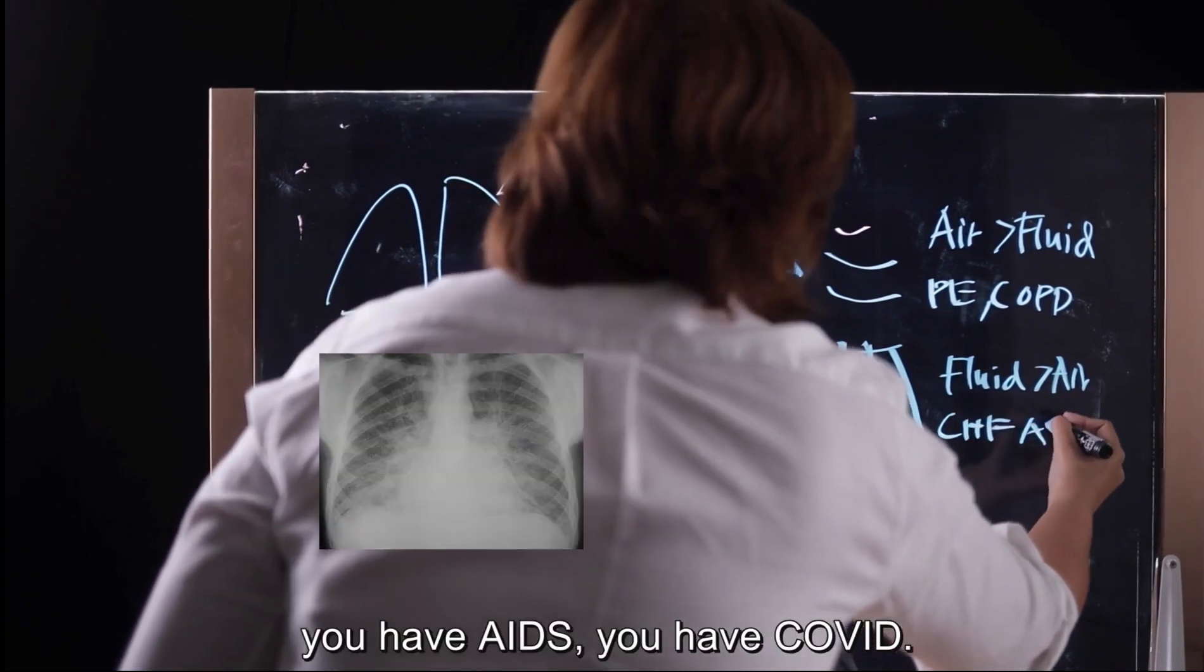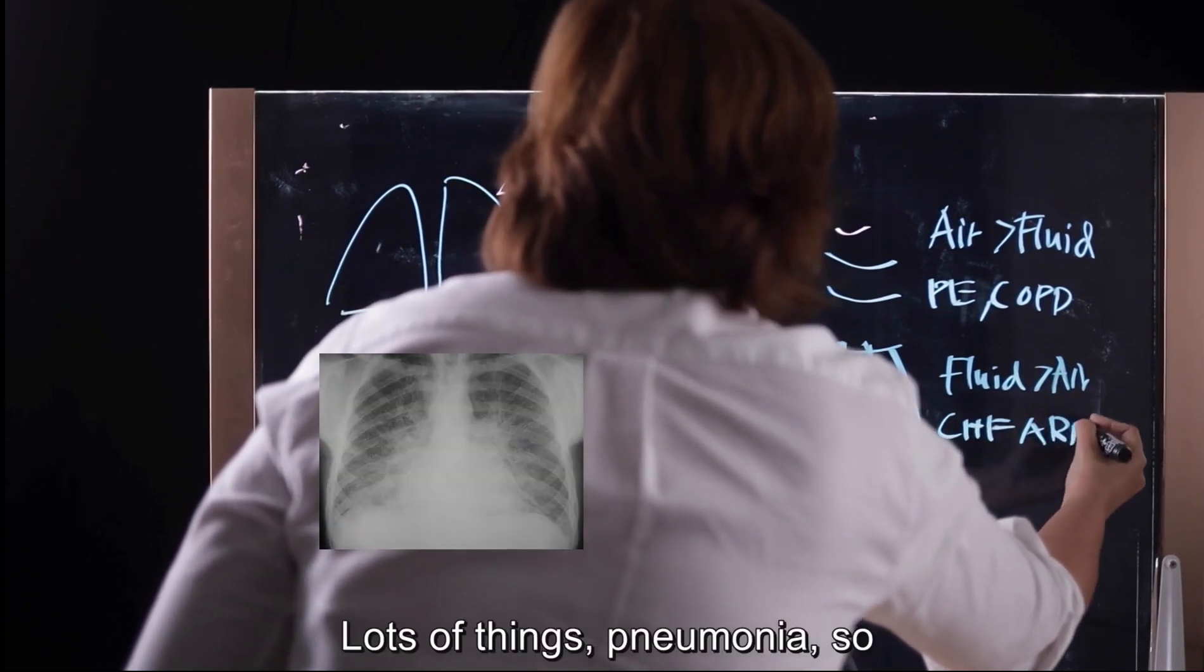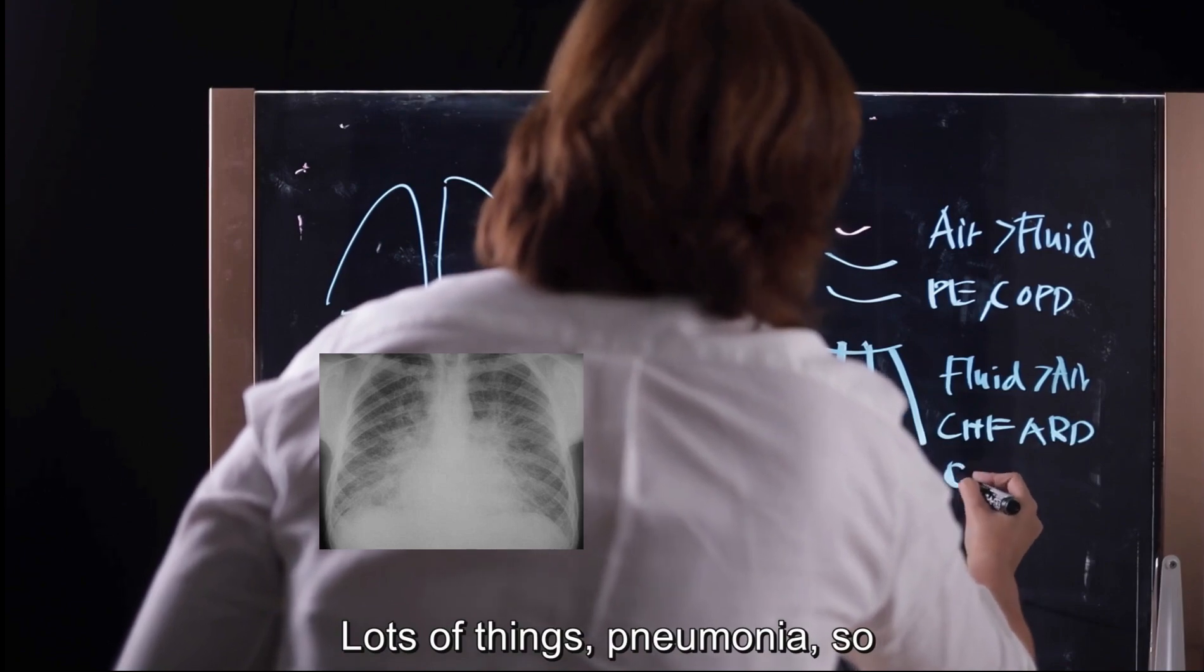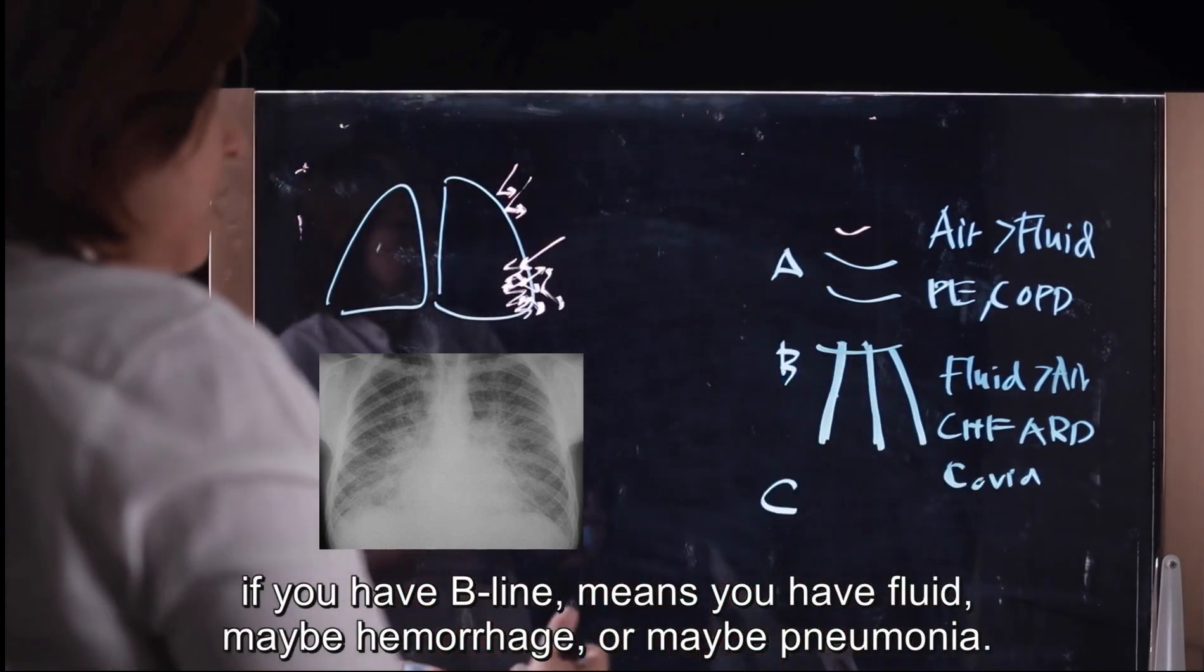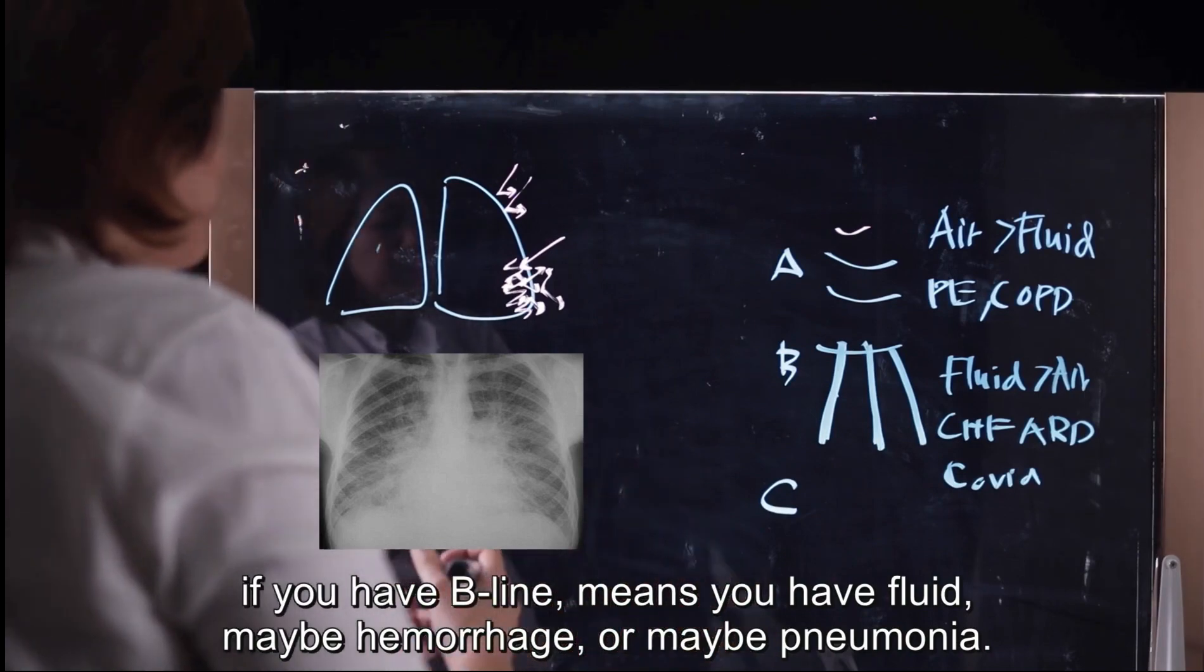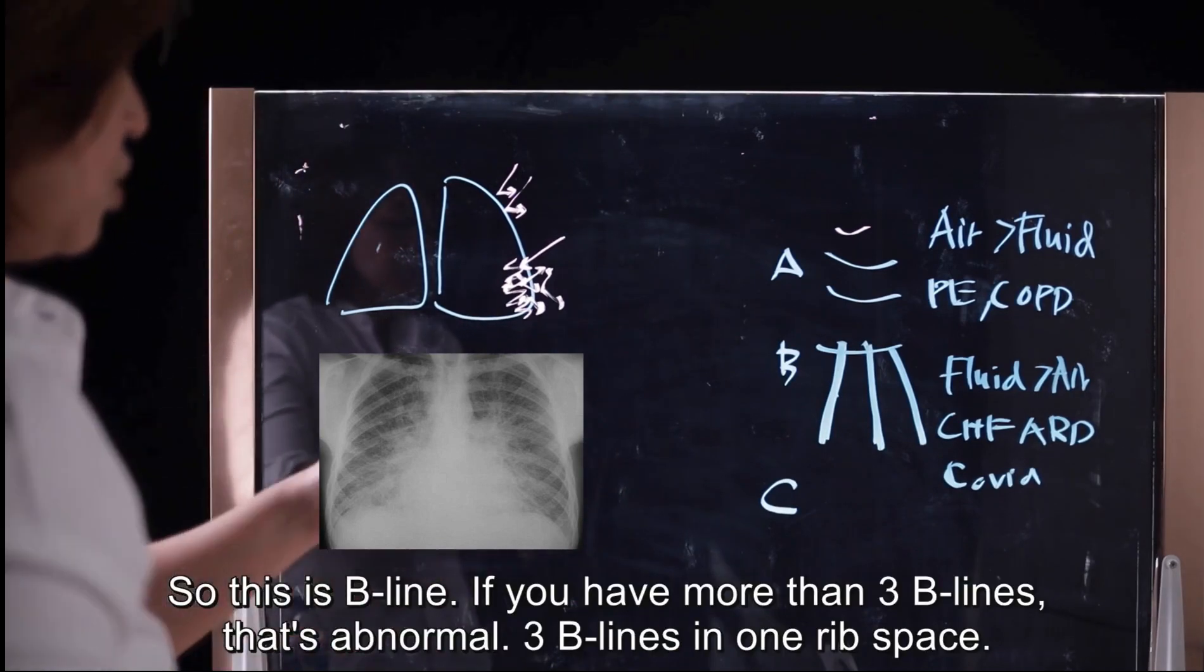You can see this in any situation that you have fluid in lung. So let's say you have heart failure, you have ARDS, you have COVID, a lot of things, pneumonias. So if you have B-line, it means you have fluid, maybe hemorrhage, or maybe pneumonia.